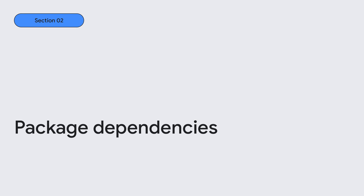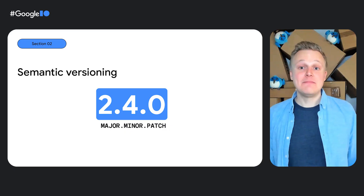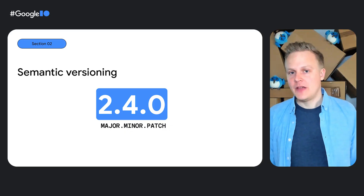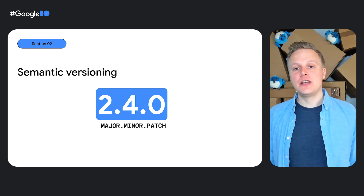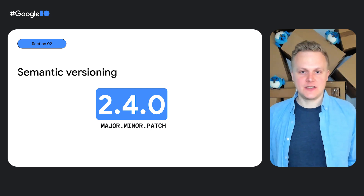I'm going to talk about how you can manage package dependencies. Before we dive deep into dependencies, we need a quick note on package version numbers and how version numbers relate to each other. Dart uses semantic versioning, also known as Semver, where each version number is made up of a major, minor, and patch number separated by dots.